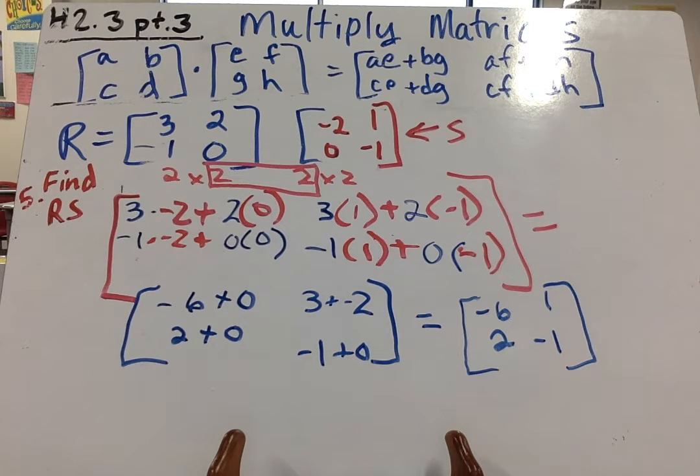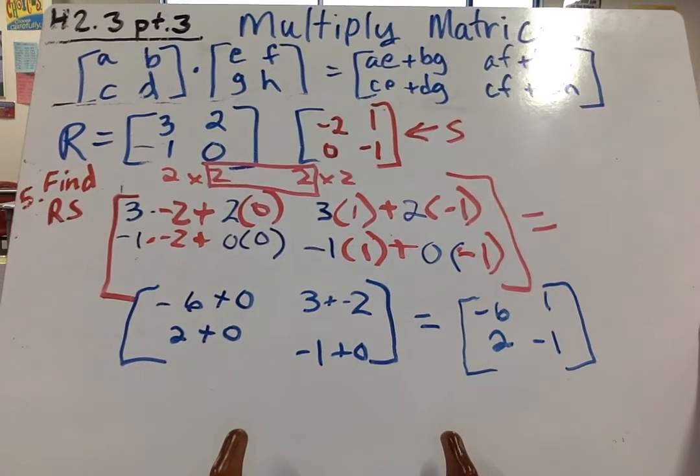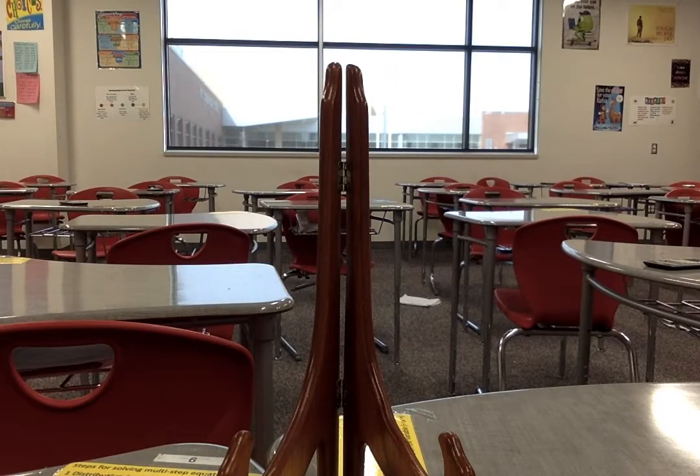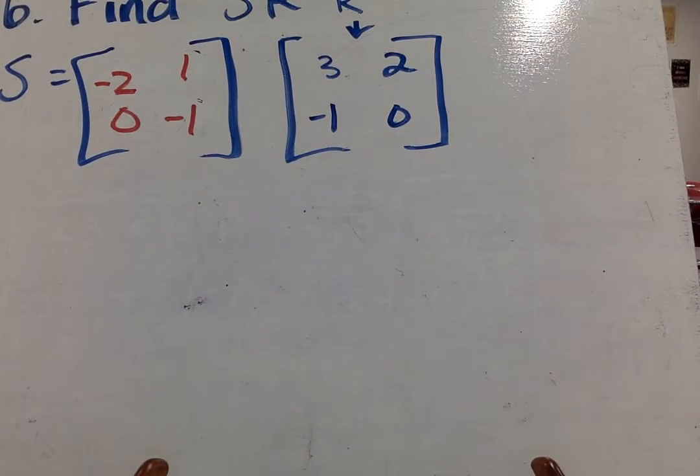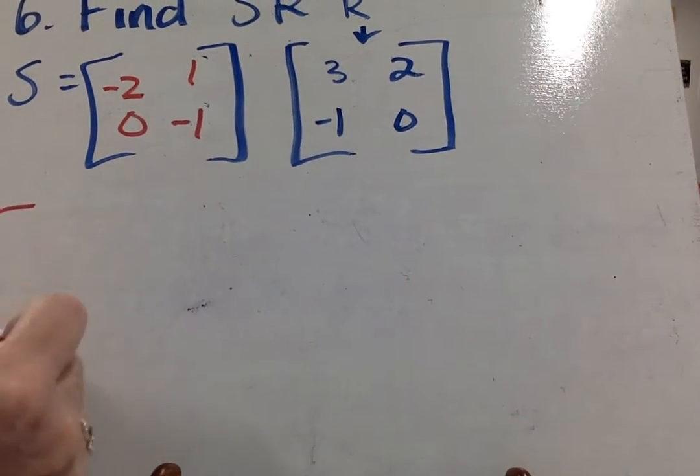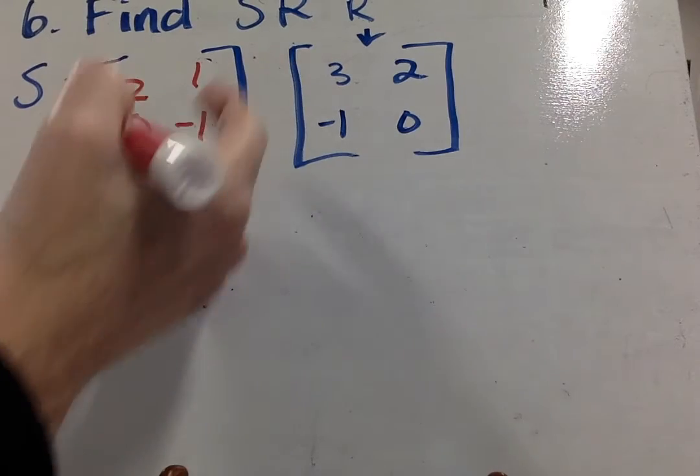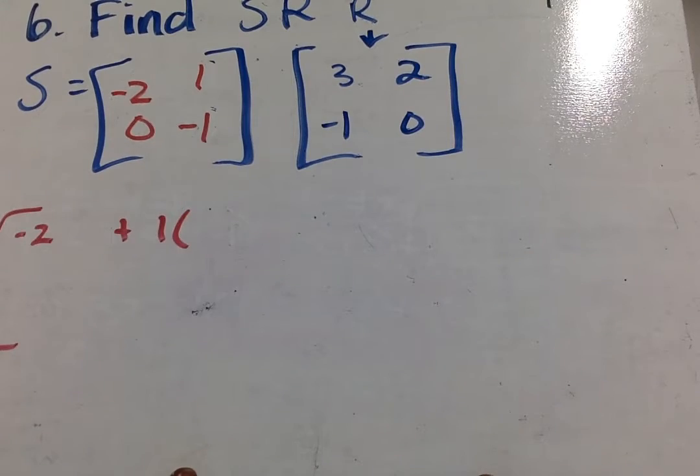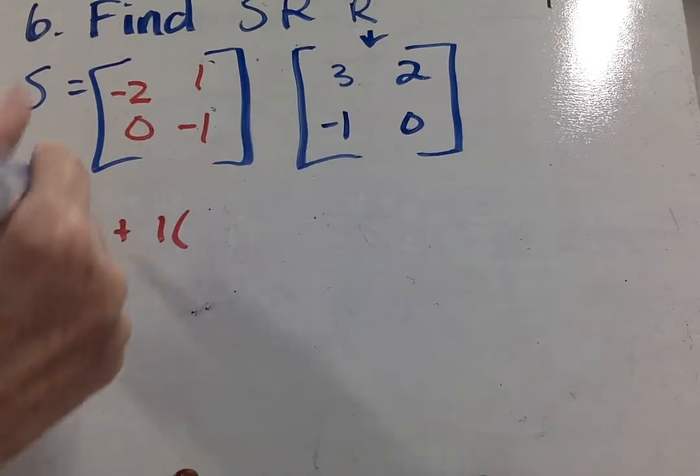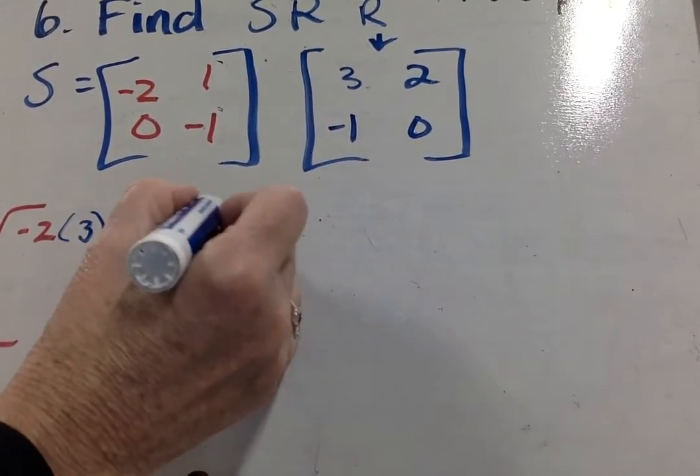Now we're going to go ahead and do SR. So this is R times S. Now we're going to do S times R. Now S times R will probably be different than R times S, because multiplication of matrices is not commutative. In other words, 3 times 5 is not going to be the same. And I will show you here. So we start here and we go up for our first number, negative 2 times 3 plus 1 times 2. So I took them both from this one.